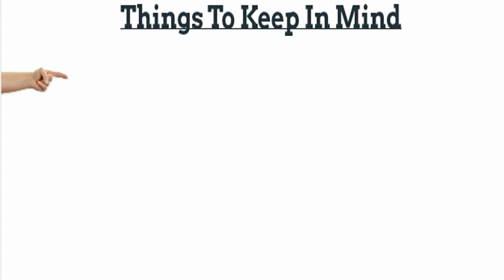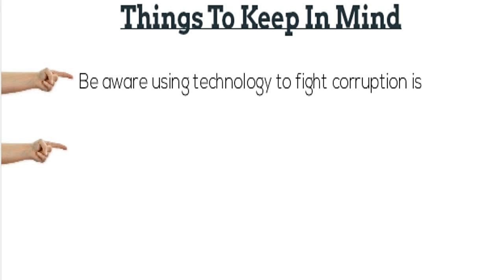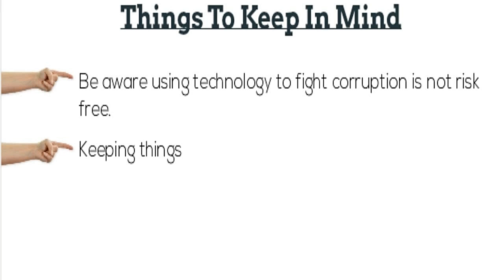Things we have to keep in mind: we have to be aware that using technology to fight corruption is not risk-free. So to avoid hacking and other cyber attacks, the government should adopt tight security measures. And the main important thing — we should keep apps and websites simple and they should be integrated with the database of the government.